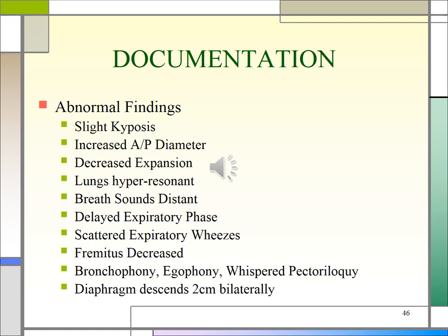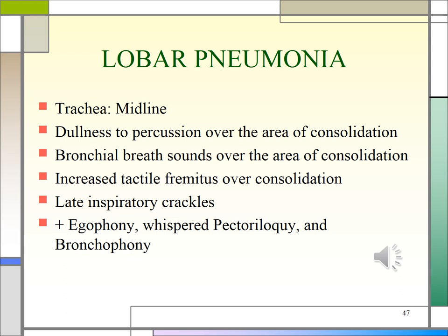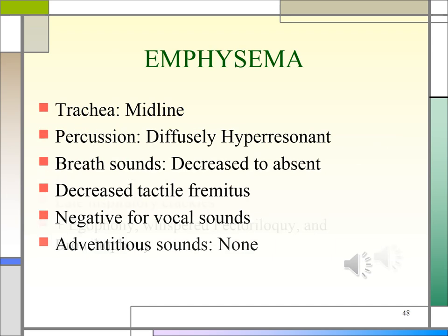If the diaphragm is descending only two centimeters bilaterally, it's not descending enough — remember, that should be three to five centimeters. Typical findings with lobar pneumonia include a midline trachea, dullness to percussion over the area of consolidation, bronchial breath sounds over consolidation, increased tactile fremitus, late inspiratory crackles, and positive egophony, whispered pectoriloquy, and bronchophony. In contrast, with emphysema: the trachea will be midline, you'll have diffuse hyperresonance on percussion, breath sounds will be decreased or absent, decreased tactile fremitus, no vocal sounds such as bronchophony, egophony, or whispered pectoriloquy, and no adventitious sounds.